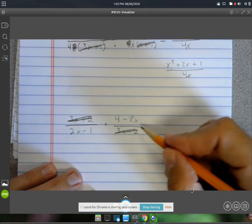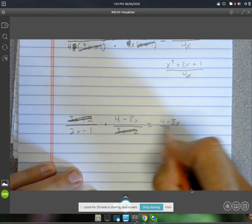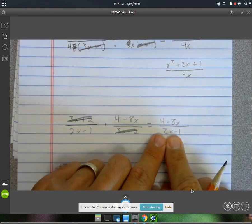Now, let's see what we have left here. We've got 4 minus 8x over 2x minus 1. 2x minus 1 will not factor.